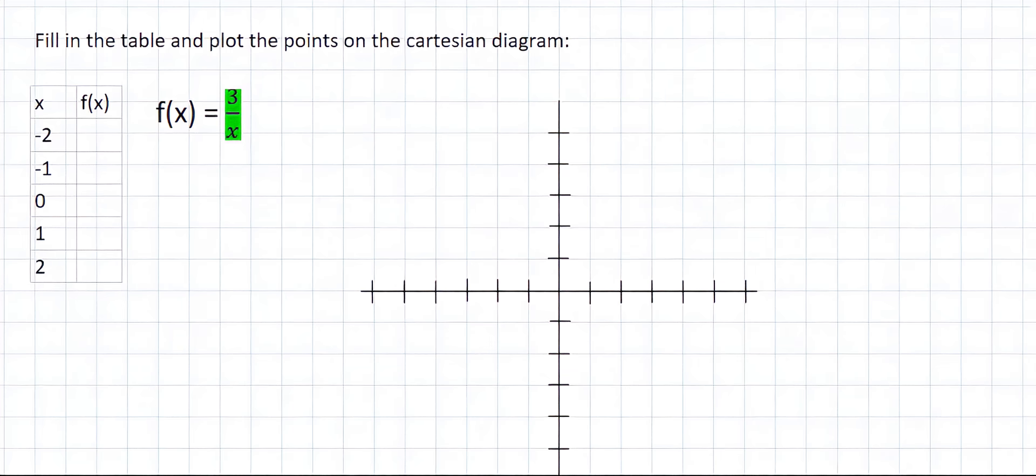As always, let's have a look and see what shape we form when we plug the following five values into this equation. The first point we're going to plug in is negative 2. If you work that out, you're going to end up with 3 over negative 2, which is the same as negative 1.5.